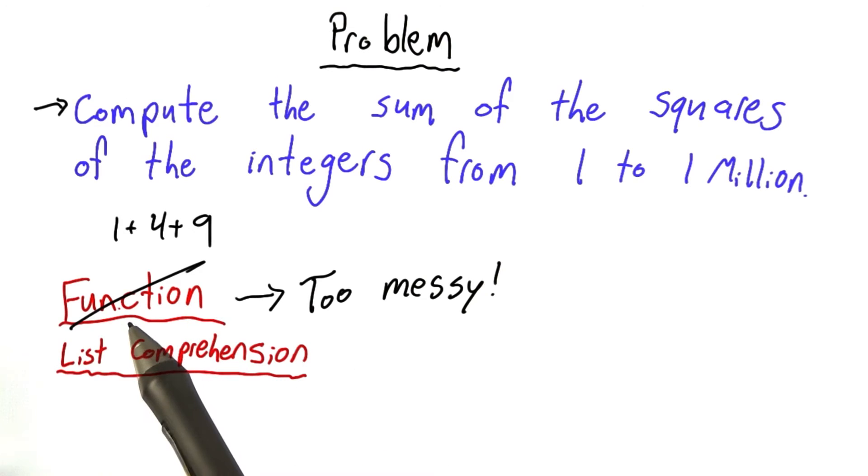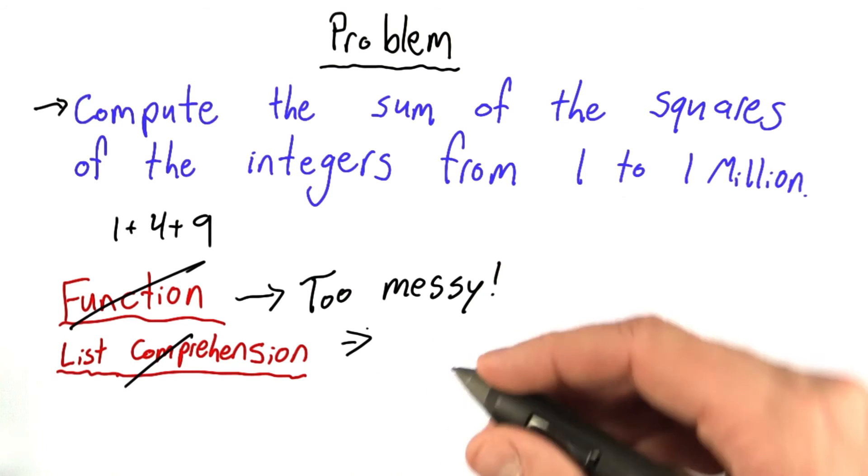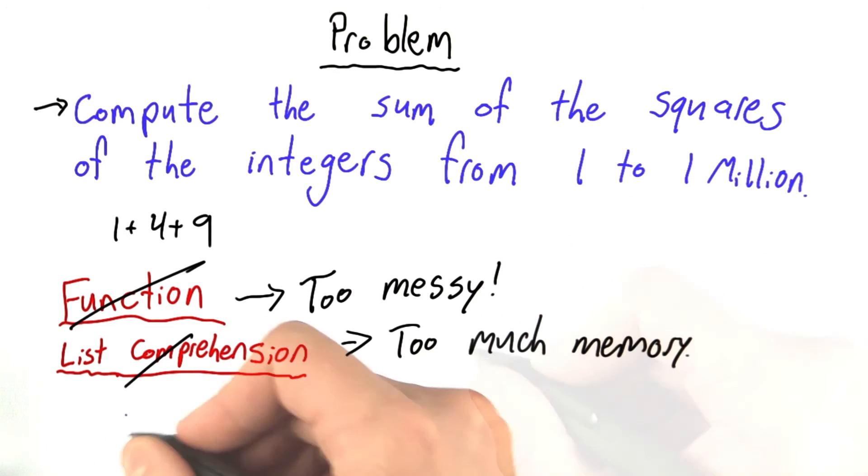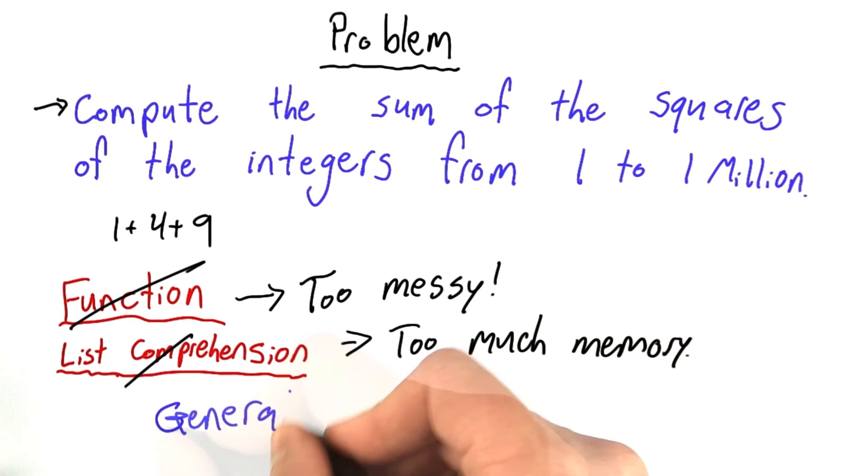So we saw that the function was too messy to solve our original problem. List comprehensions were okay, but used a bit too much memory, and so the best answer was really the generator.